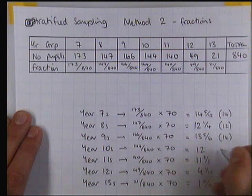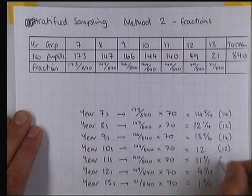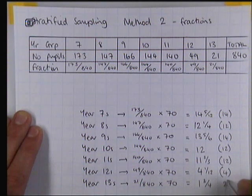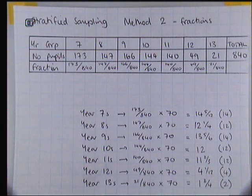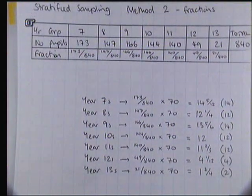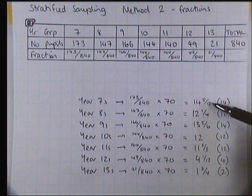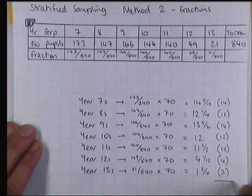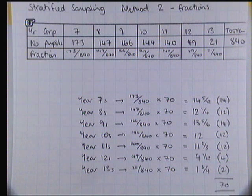If I just round those quickly, you'll notice that we're getting the same answers as we did with the first method. Some of your calculators will even turn these fractions into decimals for you so that you have a bit better luck rounding. Then all we do is check that those add up to 70, which in this case they do. And you've worked out the right number of students to be collecting or asking data in each year group.